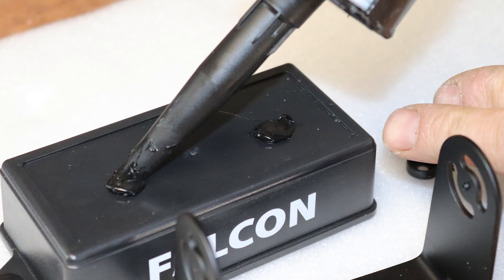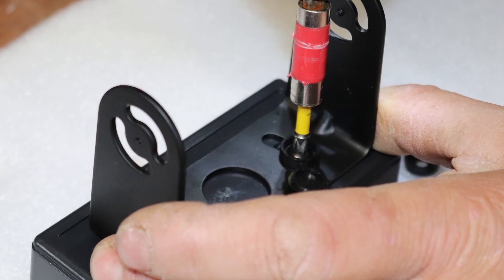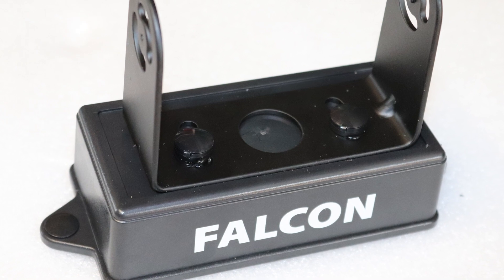Cover the holes with Sikaflex. Screw the camera bracket onto the mounting box and spread the Sikaflex so no water can get into the box.